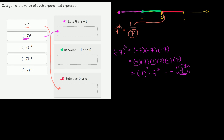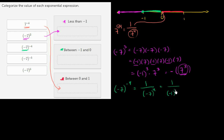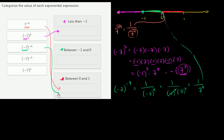Now we have negative 7 to the negative 4th. This can be a little daunting with a negative base raised to a negative exponent, but whenever I see a negative exponent, the first thing I do is take the reciprocal. So this becomes 1 over negative 7 to the 4th power. We can rewrite this as 1 over negative 1 to the 4th power times 7 to the 4th power. Negative 1 to the 4th power equals 1, so this is 1 over 7 to the 4th — between 0 and 1.